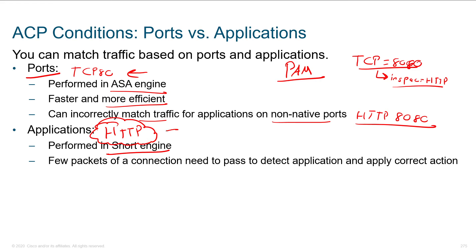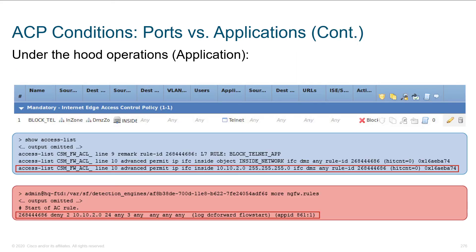The downside of application-based inspection is that it's a bit more resource intensive. Your device might be sitting at 17% utilization, so you could have plenty of room to enable it — but be mindful of overhead and keep an eye on utilization as you enable different features.